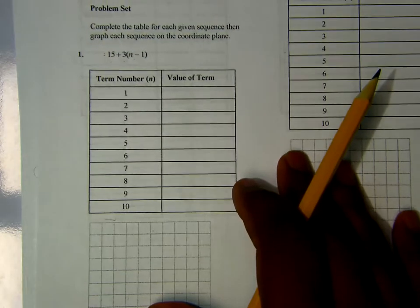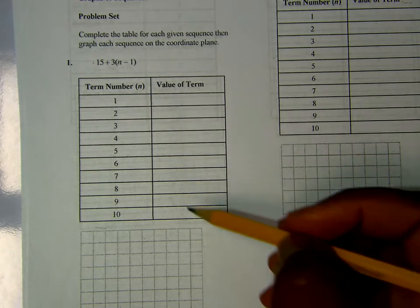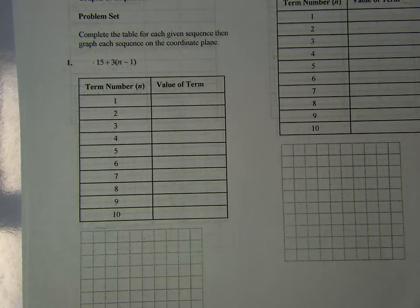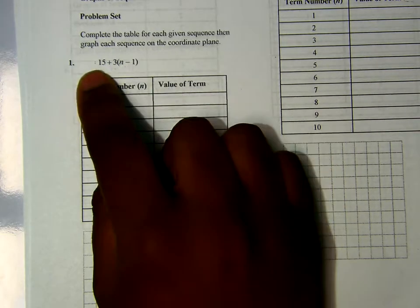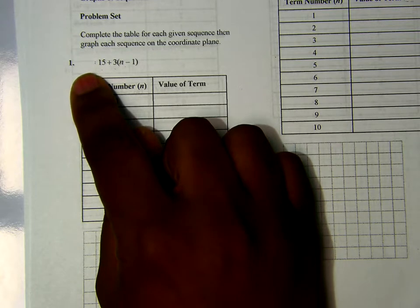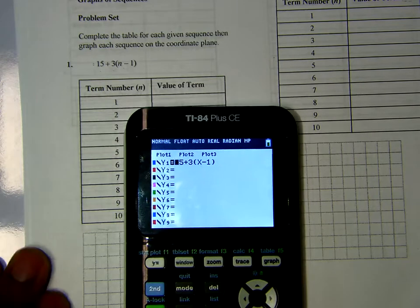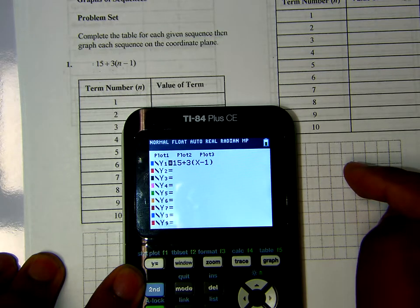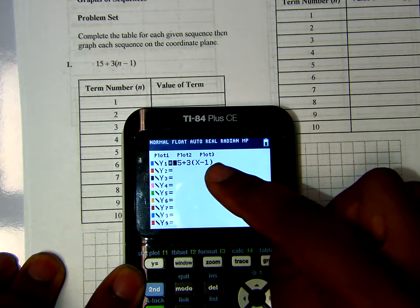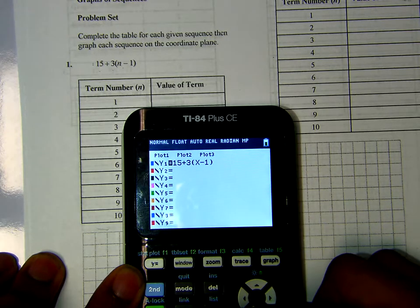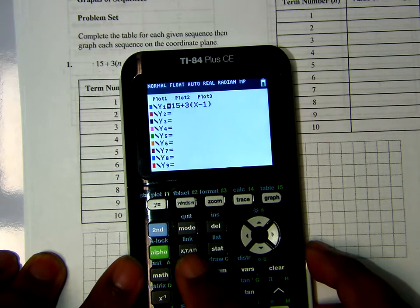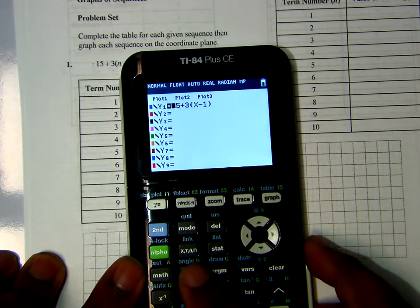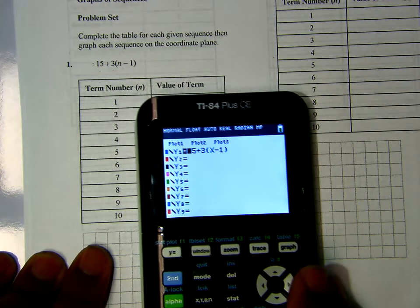What I'm going to show you is how to take your graphing calculator and get your values for your table. It's really similar to a linear equation or any regular function. What you want to do is type this in without the notation and type n under y equals into your equation. So I've got the 15 plus 3. Now, instead of n, I used x, and you can find that right to the right of the alpha key. Type it just like that.